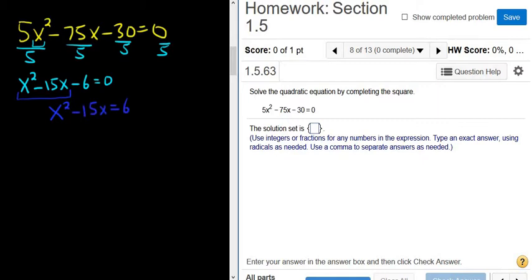Alright, here's the hard part. Whenever you're completing the square, you always take the coefficient of x—in this case, it's -15—you divide it by 2, and you square it every single time. So we look at -15 over 2, and we square it. So -15 squared is 225, 2 squared is 4.